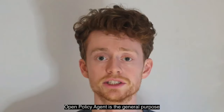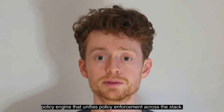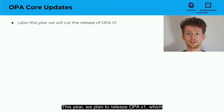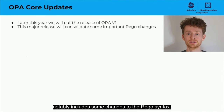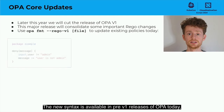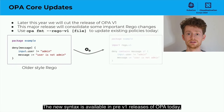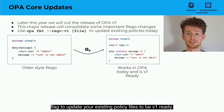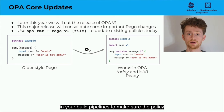Open Policy Agent is the general purpose policy engine that unifies policy enforcement across the stack. This year, we plan to release OPA v1, which notably includes some changes to the Rego syntax. The new syntax is available in pre-v1 releases of OPA today, and you can use the OPA format command with the new Rego v1 flag to update your existing policy files to be v1 ready. Also use the OPA check command with the same flag in your build pipelines to make sure the policy files remain v1 ready in the run-up to the release.